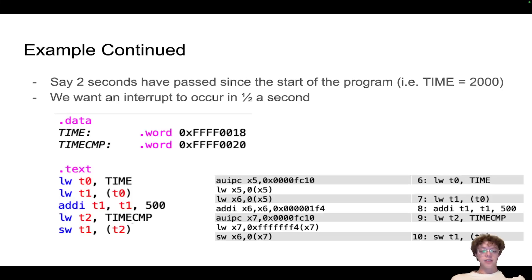How do we do that? On the left-hand side here I provided the RISC code. This is one way to work with these MMIO locations. I have a .data section where I define TIME and TIMECMP to the addresses that we give you and that everyone agrees upon.